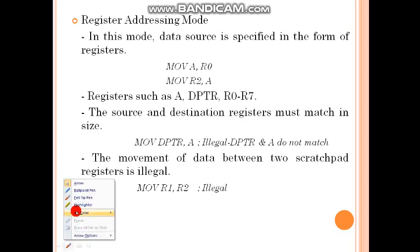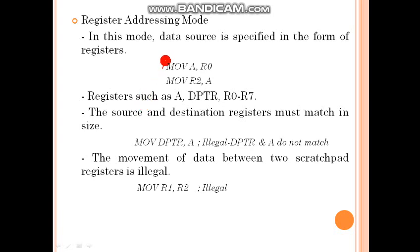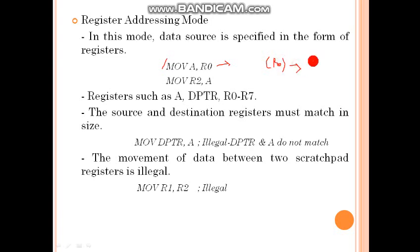Here is a simple example to understand this. The instruction is MOV A, R0. What will happen due to this instruction? The content of R0 will be moved to the accumulator. So R0 ke content accumulator mein jayenge. Agar R0 mein 10H ho, to A mein 10H chala jayega — meaning A ke content 10H ho jayenge.